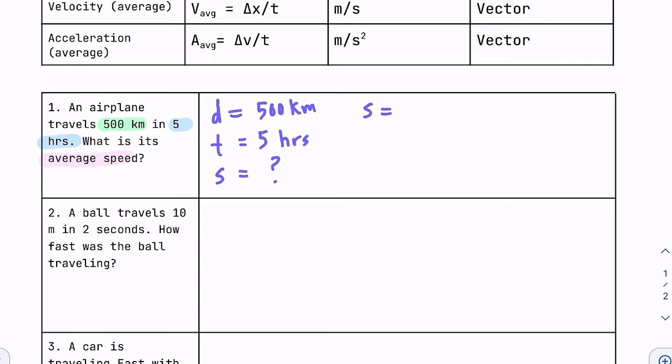So speed equals distance over time. And then go ahead and substitute the numbers into the equation. So speed equals distance, 500, over time, which is 5 hours. And we also divide the units, but I'm just going to write it 100 kilometers per hour like that. And that is our final answer.